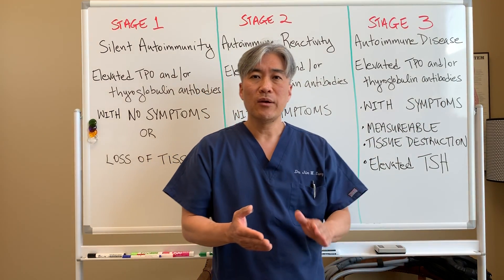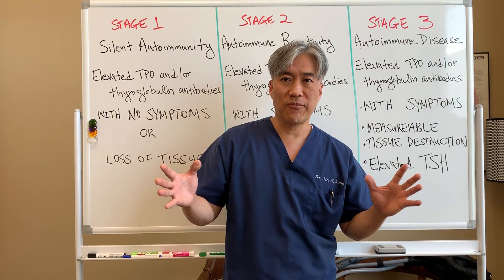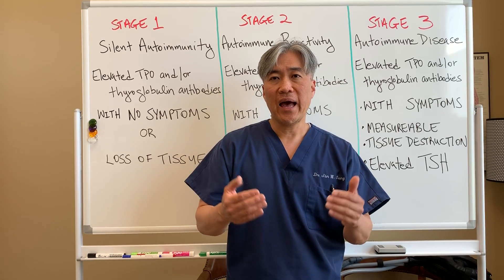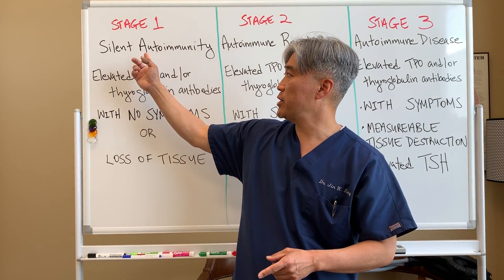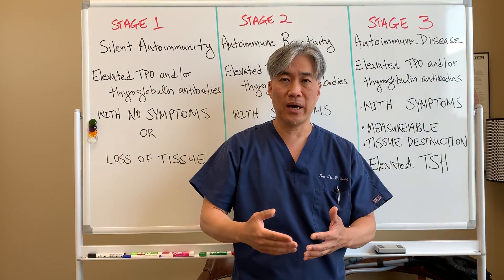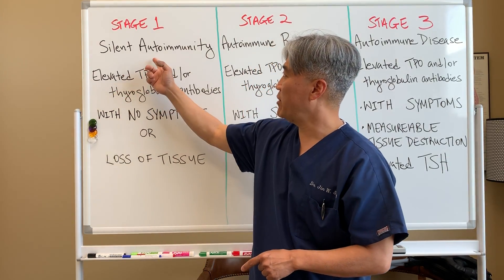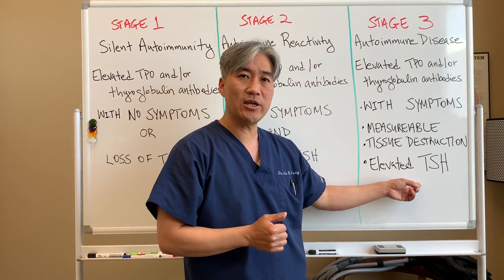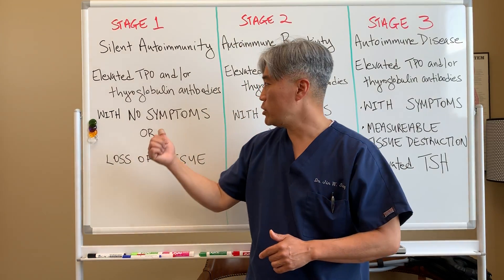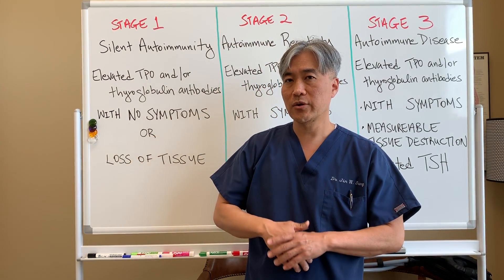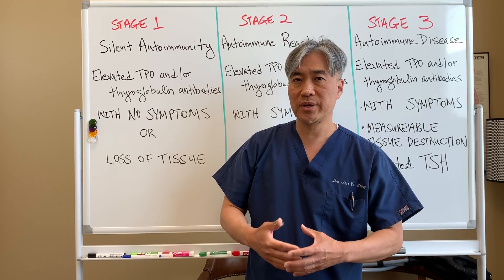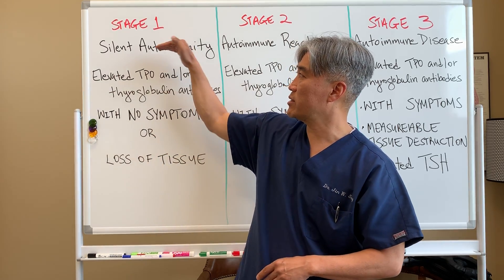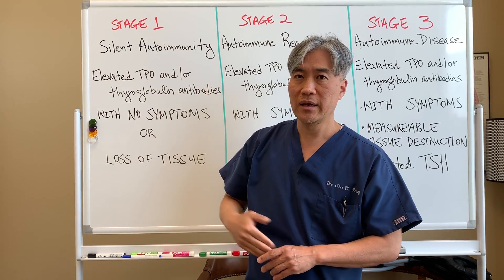When patients come in who are in this stage, what we like to do is ask them — if they have children, sisters, or relatives close to them — to have those family members check for TPO antibodies and thyroglobulin antibodies. The reason is they might have silent autoimmunity going on and have not reached this stage yet. If you can catch a patient early on in Stage One, there are a lot of lifestyle and nutritional management interventions that can help.